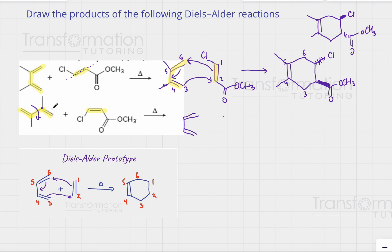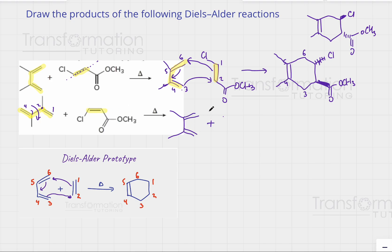So if we twist around the single bond and number one, two, three, and four — notice that carbon two has a methyl group and carbon three has a methyl group. After twisting, this molecule is the same as the one above. I'll get rid of the numbering so we're not confused when doing the actual Diels-Alder reaction. This molecule is actually the same as the one above once we twist it.